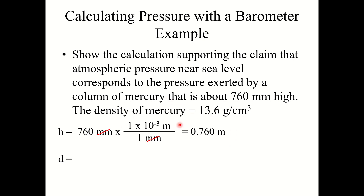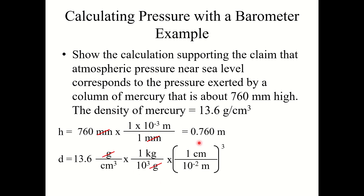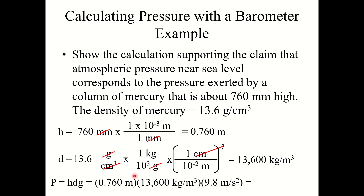Second, convert the density — remember when using this formula, density must be in kilograms per meter cubed. Taking 13.6 grams per centimeter cubed, first convert to kilograms, then convert from centimeters cubed to meters cubed. It's important to cube the conversion factor — both the unit and the number must be cubed, or you will get the wrong answer. This gives 13,600 kilograms per meter cubed. Plugging into the pressure equation — height times density times g — gives 101,292.8 pascals, which is almost exactly one atmosphere (101,325 pascals).